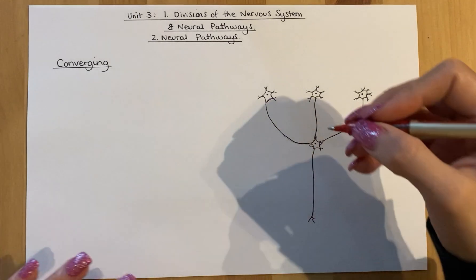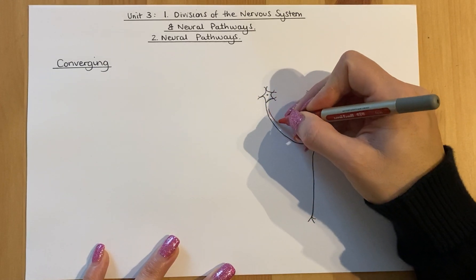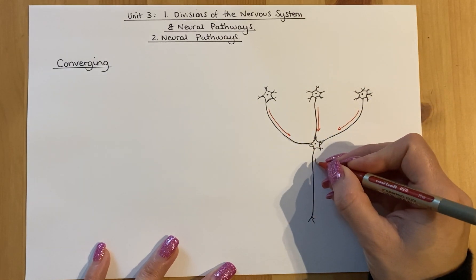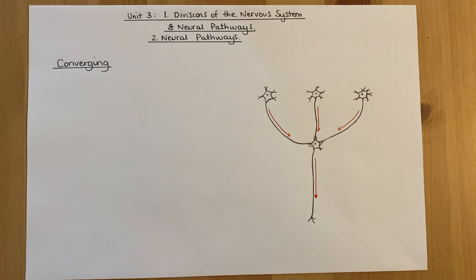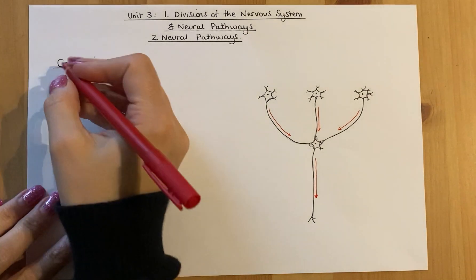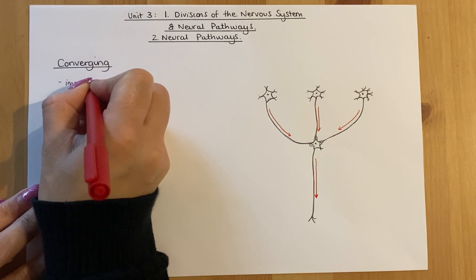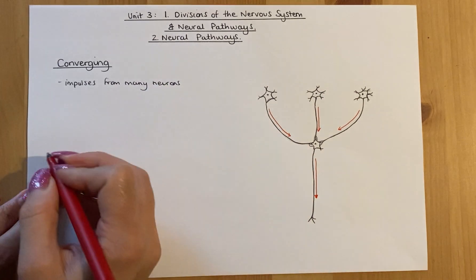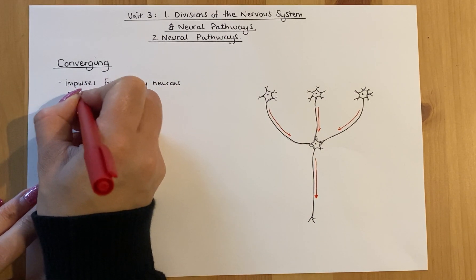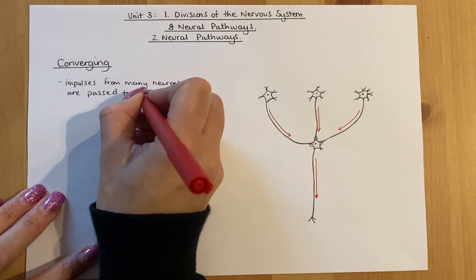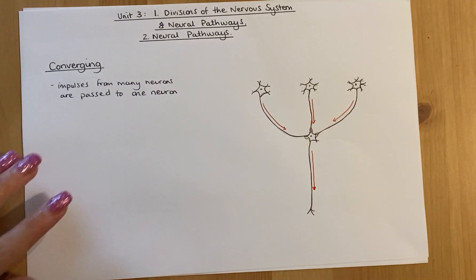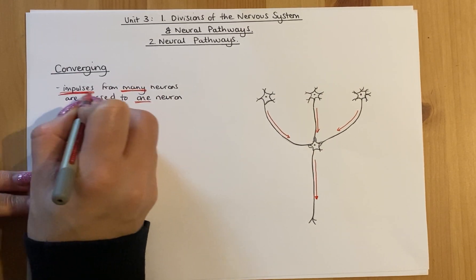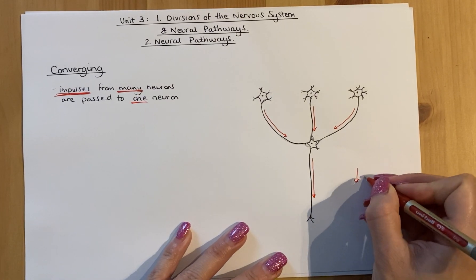In this diagram for a converging pathway, the arrows go from multiple different neurons — from many neurons — in towards one. That one neuron will then fire the impulse from all three of those down along its own projection. So for a converging pathway, impulses from many neurons are passed to one single neuron. The key thing to emphasise is it's many into one. Always remember to describe this as an impulse or impulses; an arrow shows an impulse.